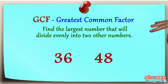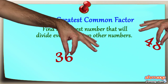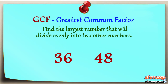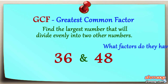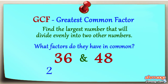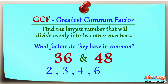Suppose you were given the numbers 36 and 48. What factors do they have in common? Well, both numbers are even, so 2 works. 3 is also a factor, as are 4 and 6. But the greatest common factor — the granddaddy of them all — is 12.